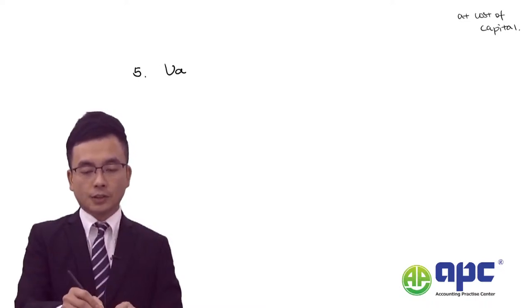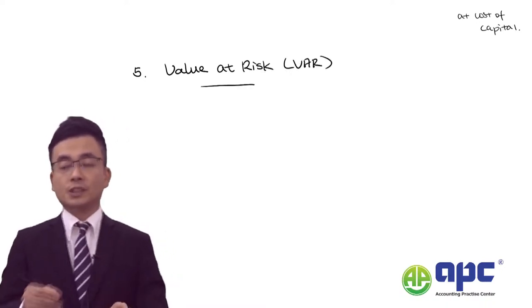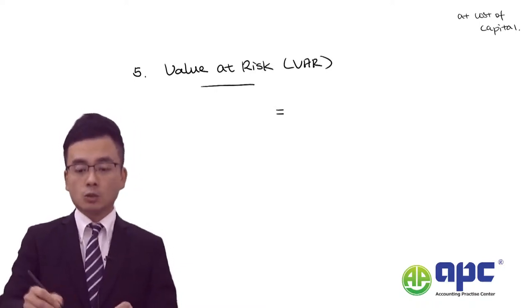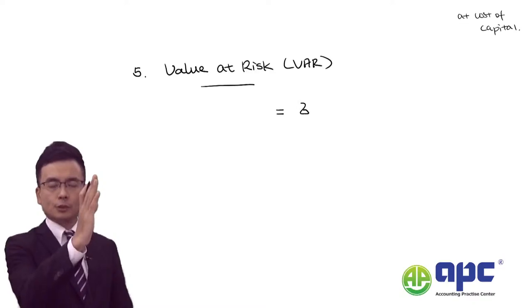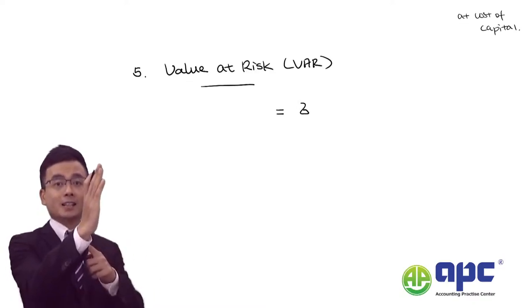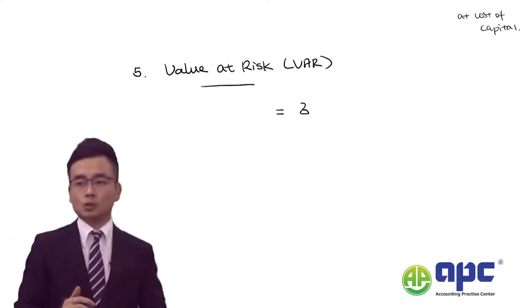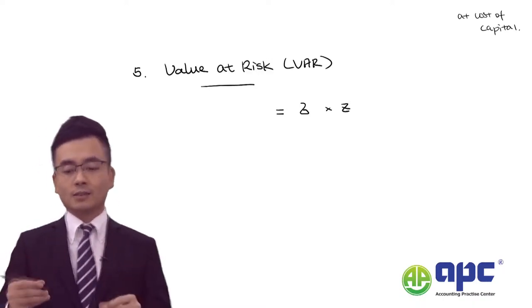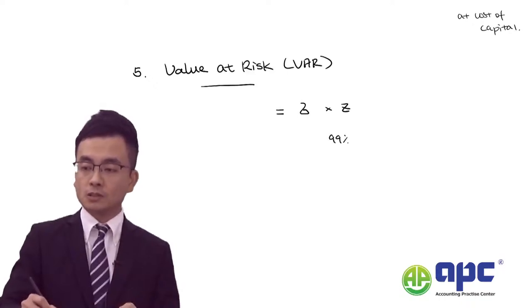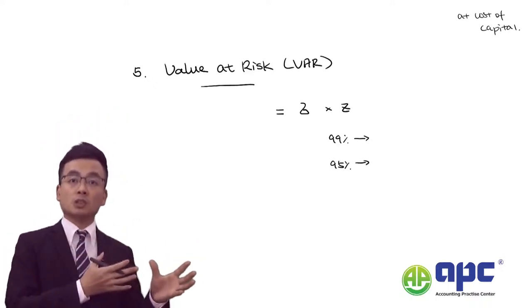Now let's look at value at risk (VAR). The calculation is: value at risk equals the standard deviation multiplied by Z, and then multiplied by the square root of T (i.e., T to the power of 0.5). The examiner will give you Z directly — for 99% confidence level, Z equals 2.33; for 95% confidence level, Z equals 1.65.